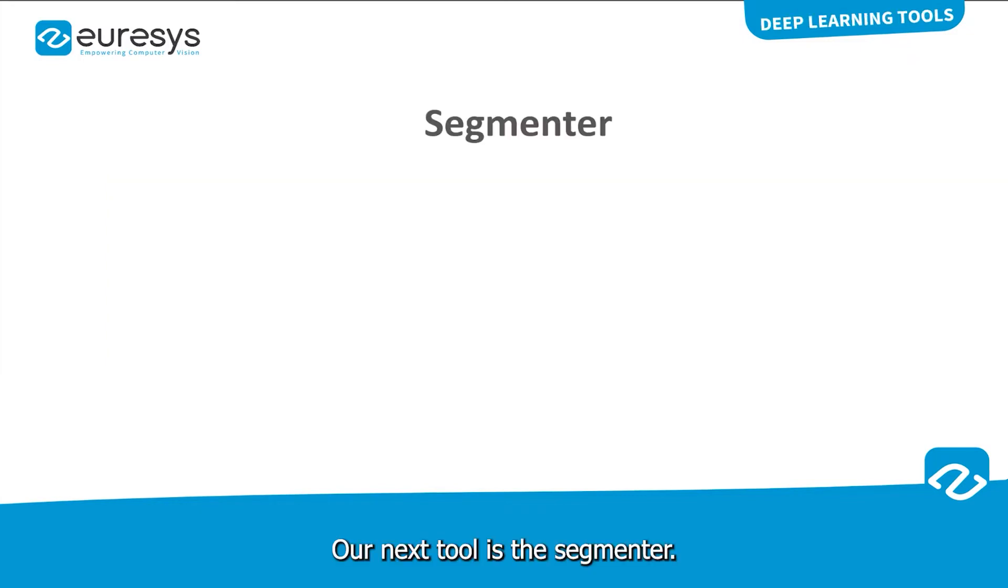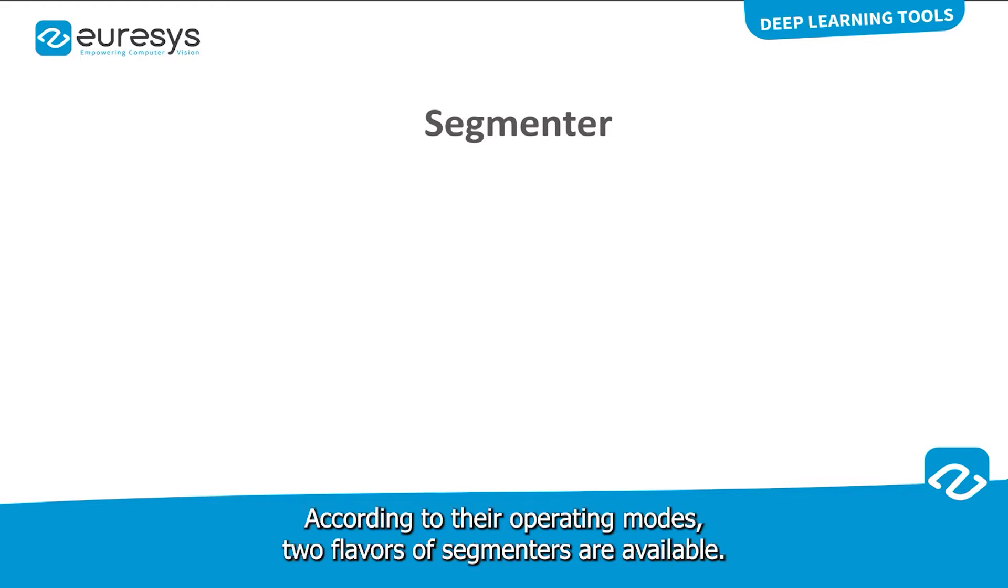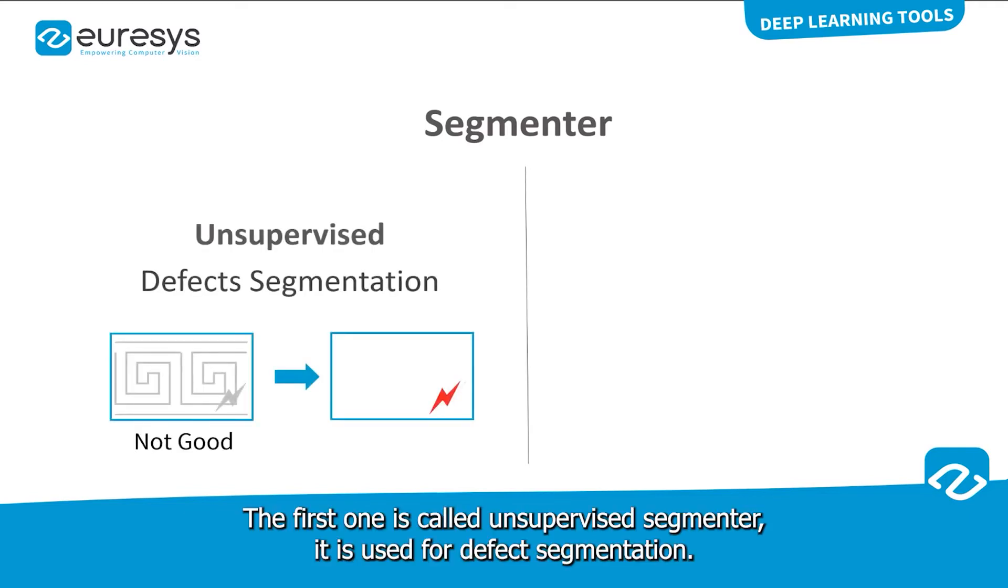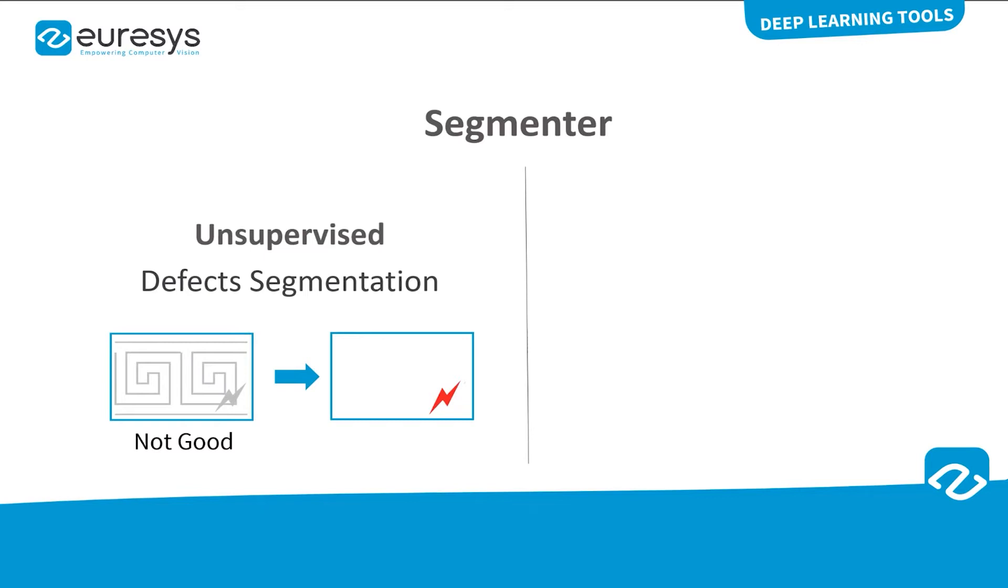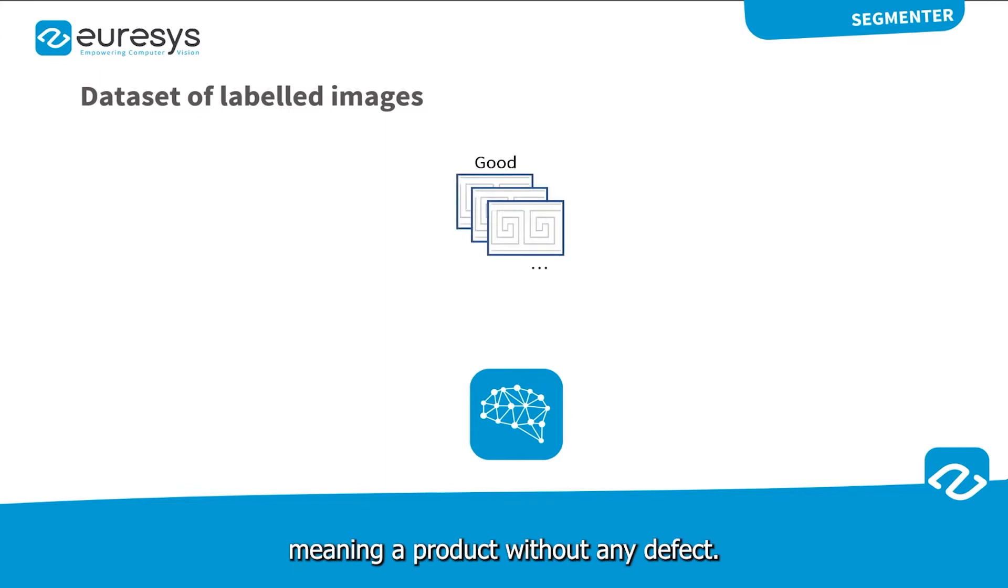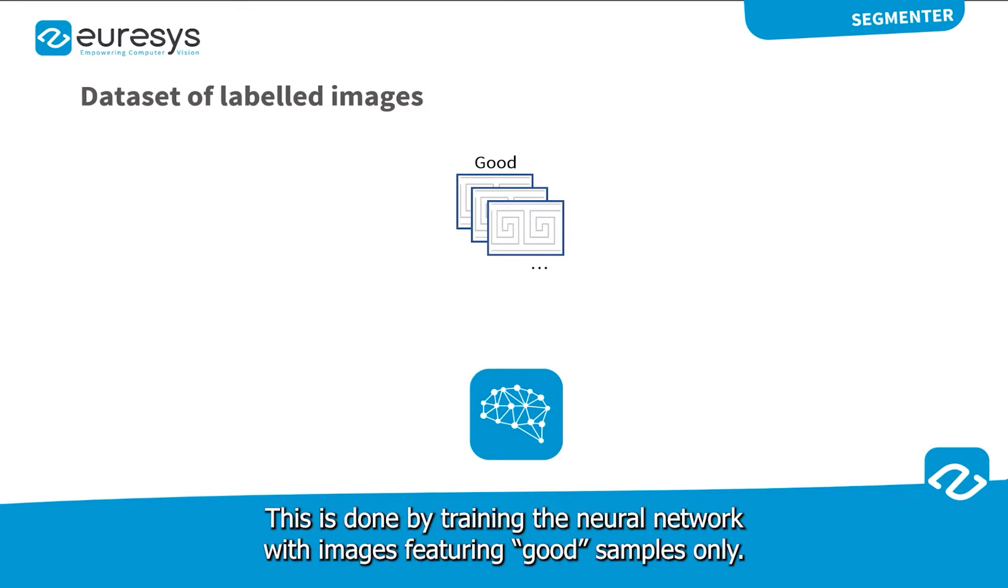Our next tool is the Segmenter. According to the operating modes, two flavors of Segmenters are available. The first one is called Unsupervised Segmenter. It is used for defect segmentation. It works by learning a model of what is a good product, meaning a product without any defect. This is done by training the neural network with images featuring good samples only.